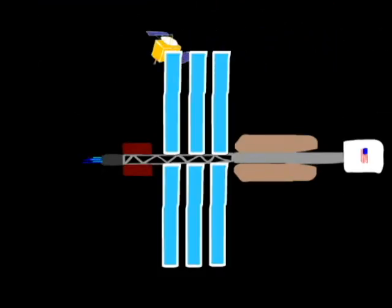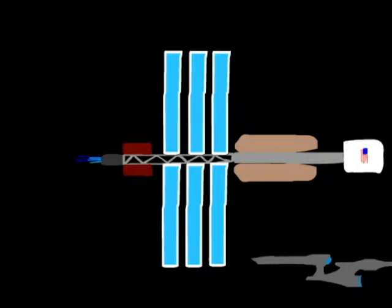Electric propulsion is a method of propelling spacecraft using electricity instead of a chemical reaction to accelerate. This is the principle behind all three main types of electric drive. More on this in a minute.